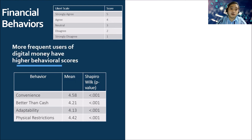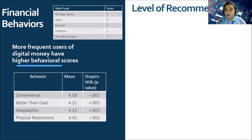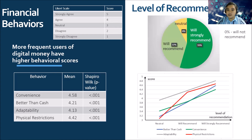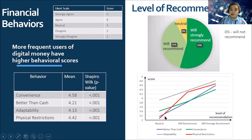We can see that more frequent users of digital money have higher behavioral scores. As for the level of recommendation, we asked respondents whether they would recommend digital money to family and friends. 55% will strongly recommend it, 37% will recommend it, and 8% are neutral. 0% would not recommend it. The regression line shows that higher levels of recommending digital money correspond to higher behavioral scores, while those who are neutral have lower behavioral scores.